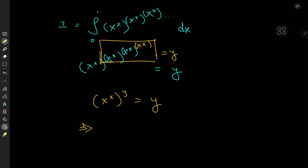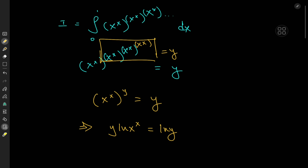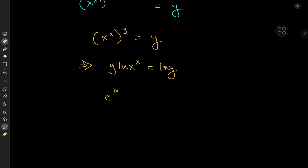Now I can introduce logarithms: Y times log of x to the x equals log Y. I'm interested in solving this for Y to get a more tangible structure than the infinite power tower. I write Y as e to the log Y, and the other term is x, with log Y on the right. This implies log of x to the x, which is x times log x, equals e to the negative log Y times negative log Y.